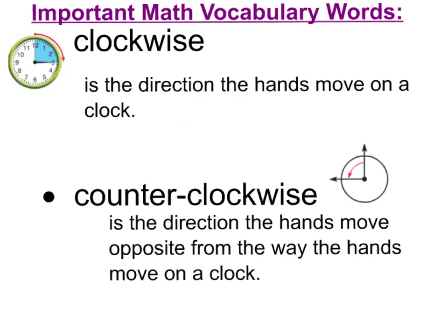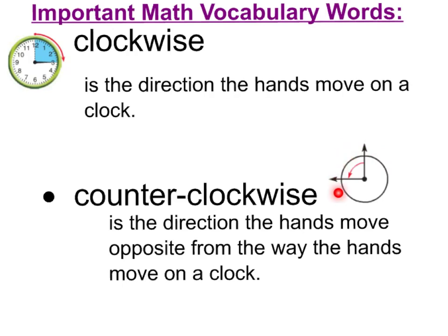Here are two very important vocabulary words I want you to master. The first one is called clockwise — the direction the hands move on a clock. Counterclockwise is the opposite direction from the way the hands move on a clock. Clockwise goes right; counterclockwise moves left, going backwards.